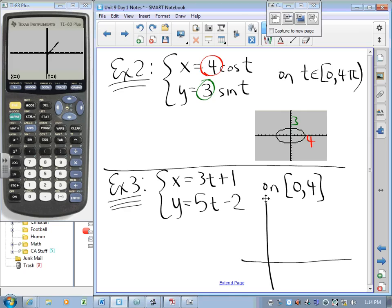Well, when time equals 0, where are we? When time equals 0, the x coordinate's 1 and the y coordinate's negative 2. We're here. And then when time equals 4, we're at 13, 18. We're here. And it appears that it's just a straight line segment connecting those. I wonder if we can prove that.